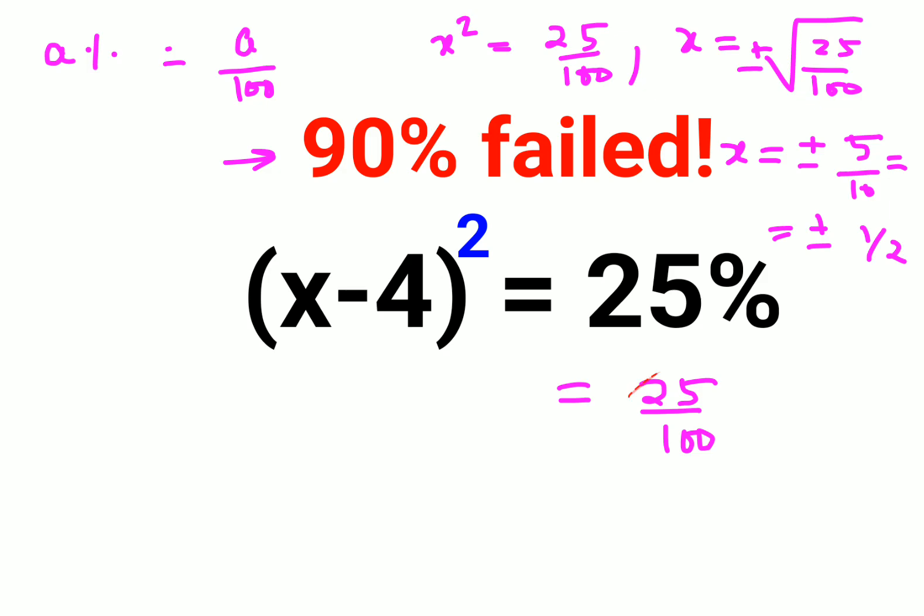So here also, instead of doing 25 upon 100, we can directly say x minus 4 gets you plus minus 1 upon 2. So basically to find the value of x, we can say x minus 4 equals 1 upon 2, or x minus 4 equals minus 1 upon 2.